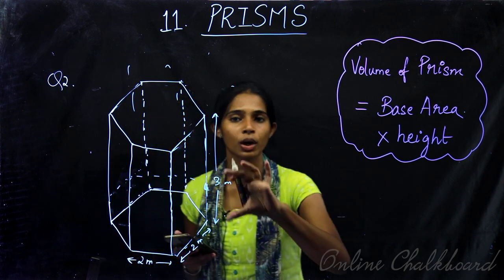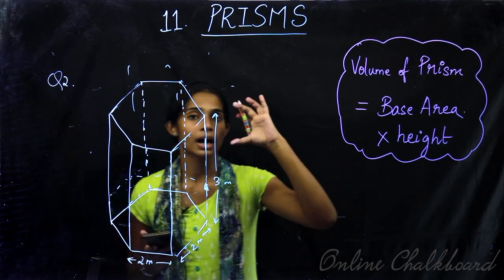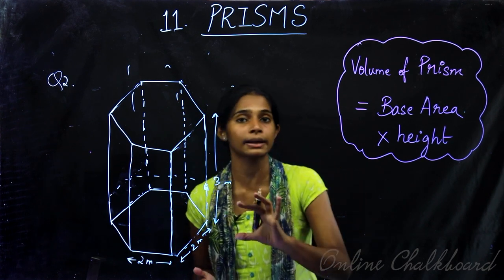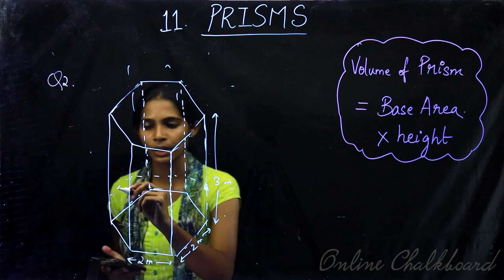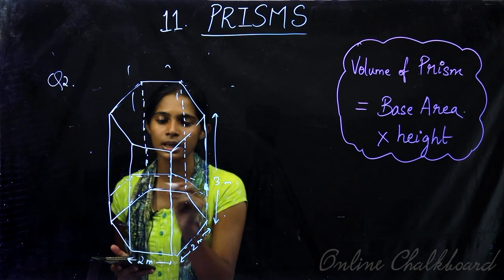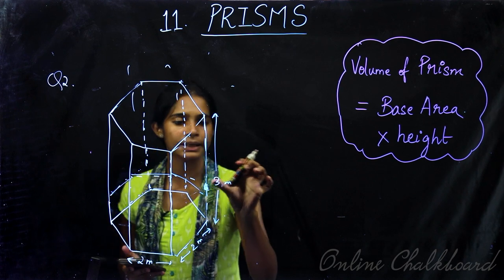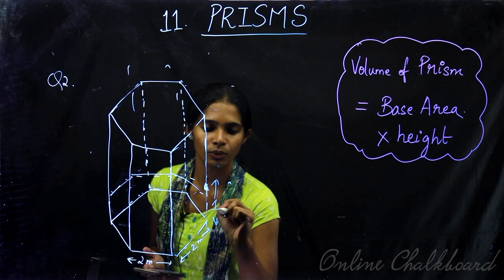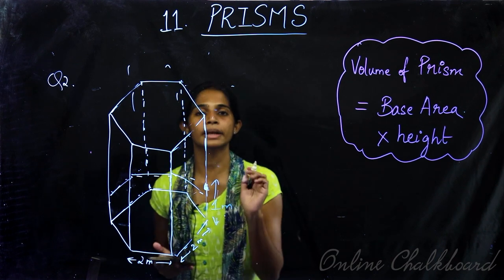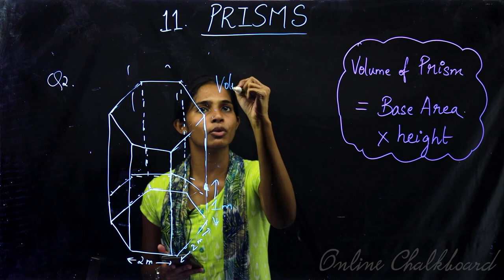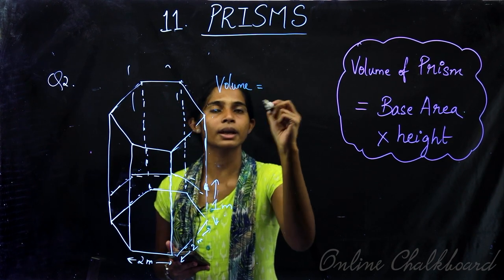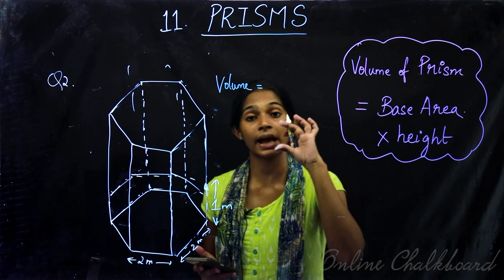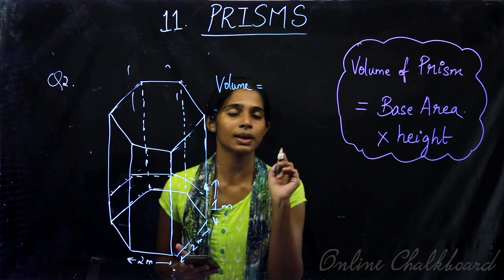So let's find the volume of the water. The height of the prism is 3 meters, but water is only 1 meter deep. So we need to find the volume of the prism where the base is a hexagon of side 2 meters and height is 1 meter.